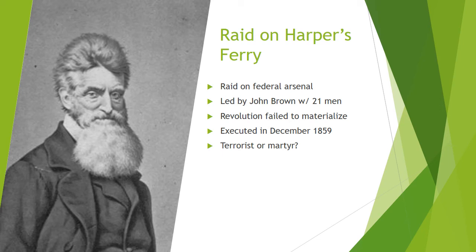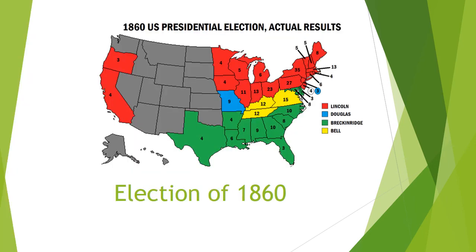That leads us to the election of 1860, which can be considered the catalyst for the Civil War. The Republican candidate in 1860 was Abraham Lincoln. Americans were somewhat familiar with Lincoln because in 1858 he had run for the Illinois Senate seat occupied by Stephen Douglas, and during the Lincoln-Douglas debates, Douglas had characterized him as an abolitionist — though he wasn't really an abolitionist but a Republican dedicated to not expanding slavery into the West. When the 1860 presidential election happened, Lincoln's party was not even on the ballot in many Southern states.